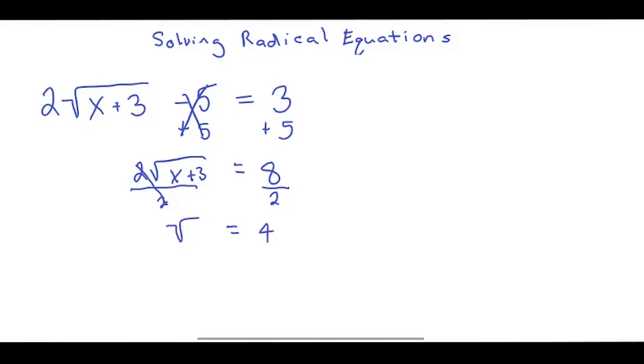Now I'm left with the square root of x plus 3 equals 4. Now we are going to solve this one and it's a square root, so I'm going to square both sides. So if I square the square root, that just leaves me with x plus 3 equals, now if I square 4, that's 16.